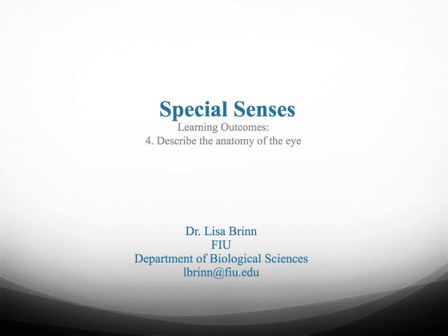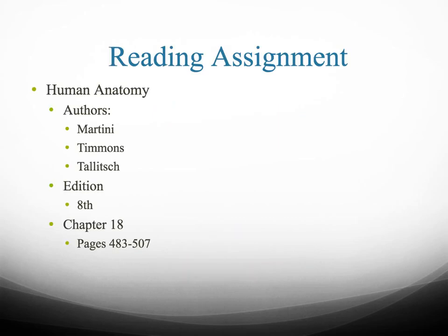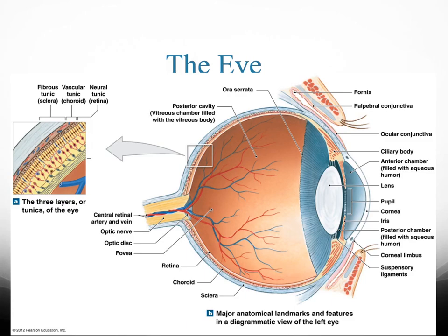This is our last learning outcome where we're going to be talking about the anatomy of the eye. The eye has several different layers and we can go from the outside in. The white part of your eye is called the sclera. Then we're going to have the choroid, which is the inner structure. The most internal layer is the retina. So we go from sclera to choroid to retina.